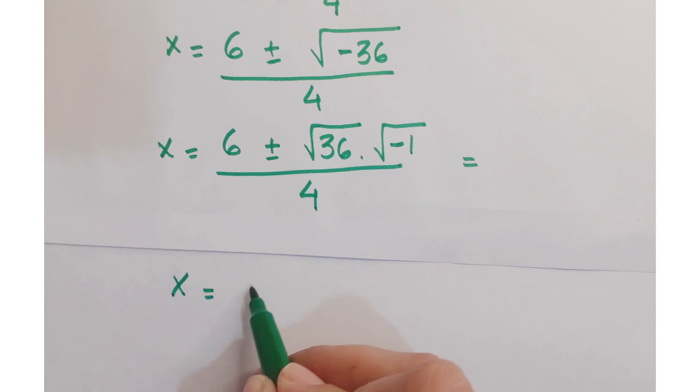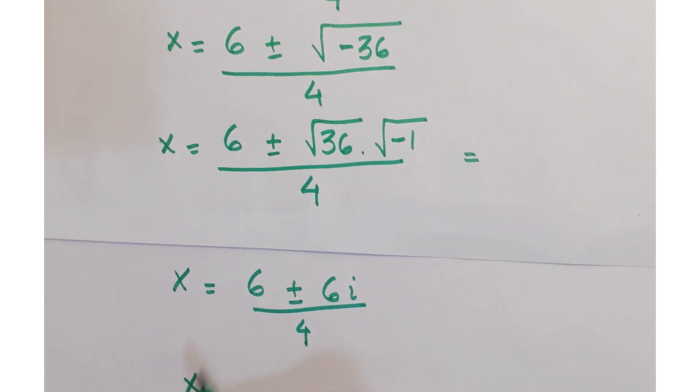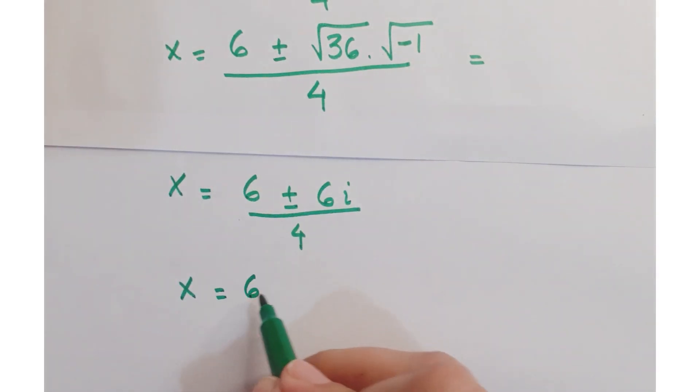Further, you can write it as 6 plus minus 6i upon 4. Taking 6 common,